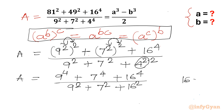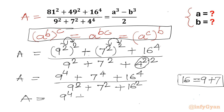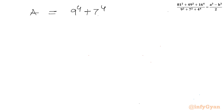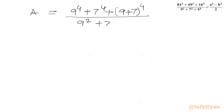Now we can write 16 as 9 + 7. So A equals (9⁴ + 7⁴ + (9+7)⁴) divided by (9² + 7² + (9+7)²). Now it is time for substitution.